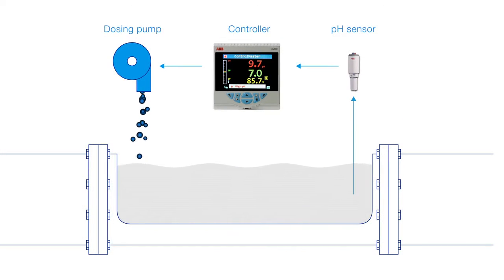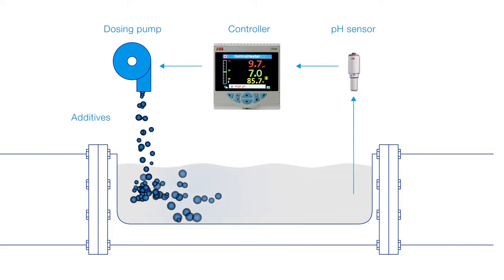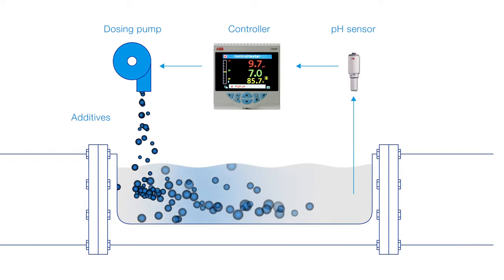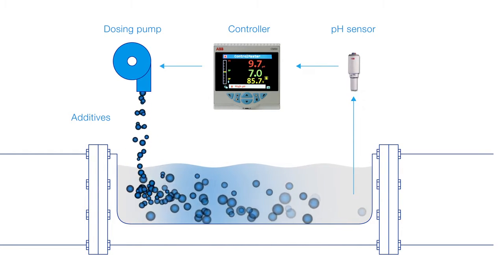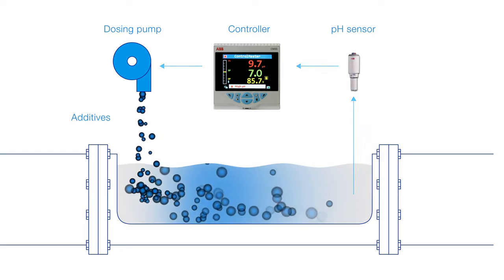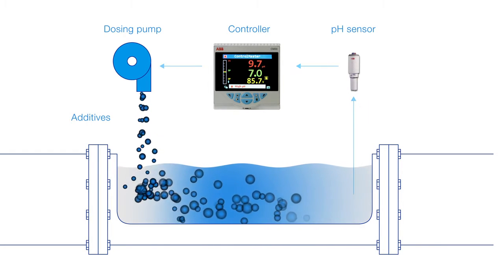Either acidic or alkaline additives are introduced to adjust the pH level in processes. However, the additive must mix with the medium and a chemical reaction take place, so results are rarely instantaneous.